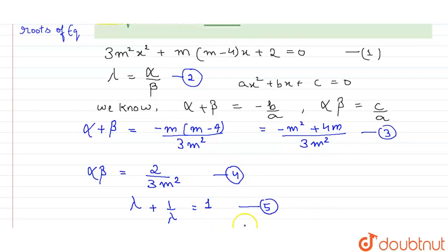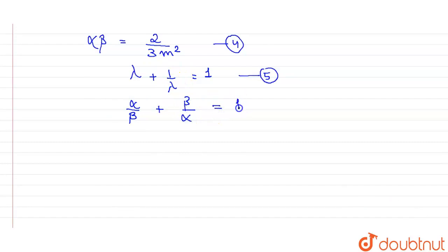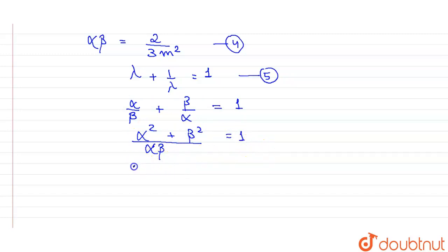In place of lambda, we put alpha/beta. So alpha/beta + beta/alpha = 1. Taking LCM, it becomes alpha² + beta² = alpha·beta. Taking alpha·beta to the right-hand side, it becomes alpha² + beta² = alpha·beta.